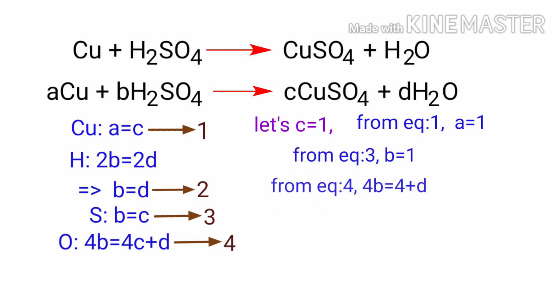From equation 4, 4b equals 4 plus d. Apply the b value in equation 2, so d equals 1. Now apply the b and d values in equation 5. Then 4 equals 4 plus d, so 4 equals 5. It is wrong.